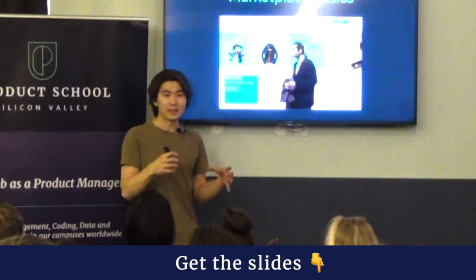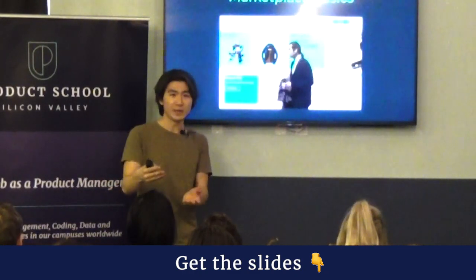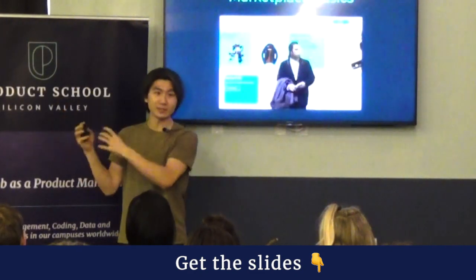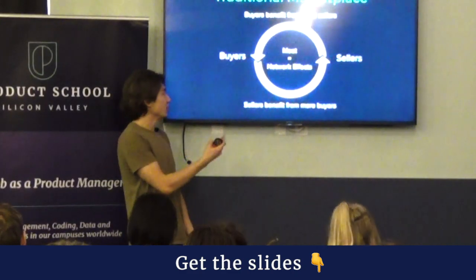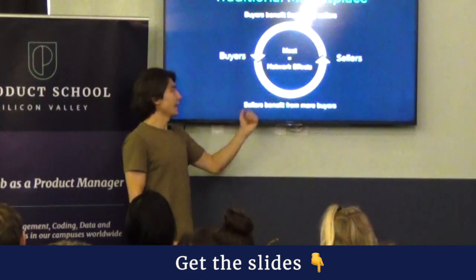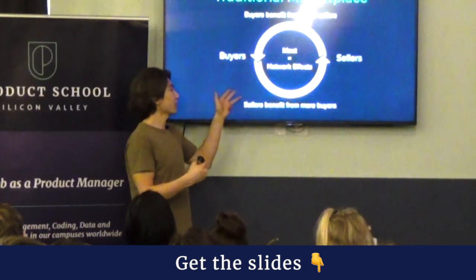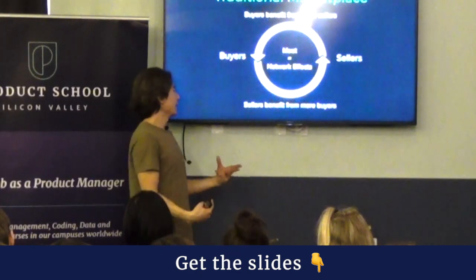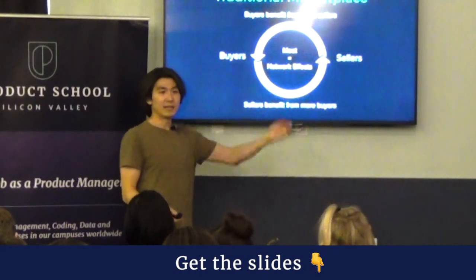A marketplace is essentially defined as a platform where it's a many-to-many transaction, whereas a traditional retailer is more of a one-to-many. If you think about eBay versus Walmart — Walmart is one company selling things to a bunch of people, where eBay is a bunch of people selling to each other. Marketplaces are really valuable because they have this wheel where buyers transact with sellers and it spins. This is essentially a term for network effects, which are really valuable because as the marketplace grows, it gets more valuable and creates a moat — sellers benefit from more buyers and buyers benefit from more sellers.